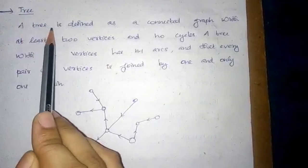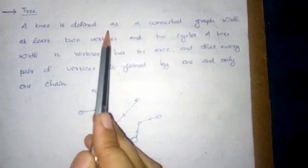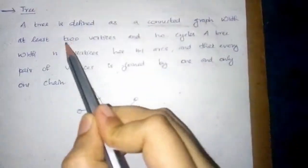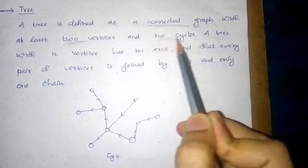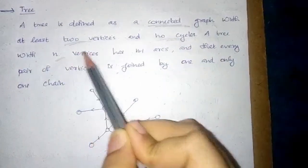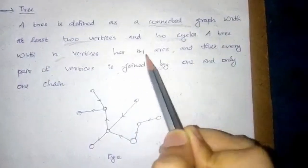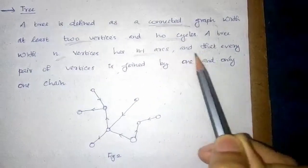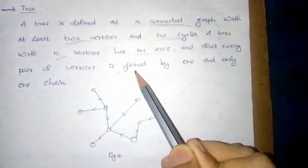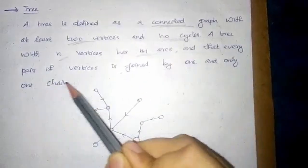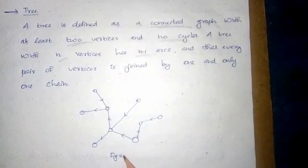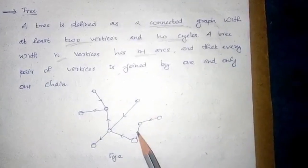Tree. A tree is defined as a connected graph with at least two vertices and no cycles. A tree with n vertices has n-1 arcs, and every pair of vertices is joined by one and only one chain. Consider figure 2 — this is an example of a tree.